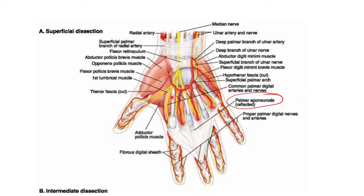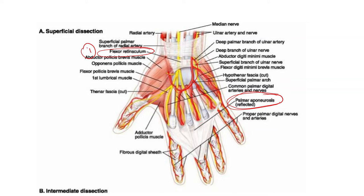This is the location of the superficial palmar arch. The superficial palmar arch is located: number one, in the area distal to the flexor retinaculum; number two, deep to the palmar aponeurosis and resting on the long flexor tendons, the lumbricals, and the branches of the median nerve. All these make up the relations as well as the location of the superficial palmar arch.